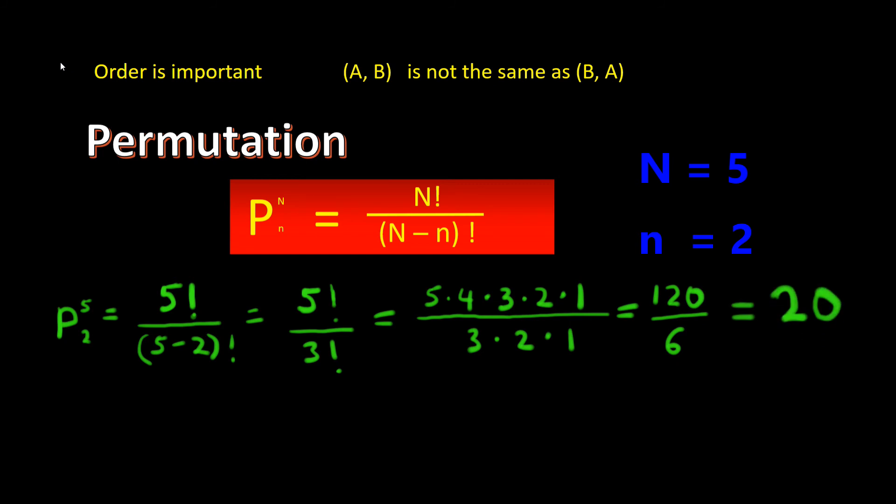So we see using the permutation formula there are 20 possible outcomes for choosing two pieces of paper out of five. Now let's see how we would do this in Excel.